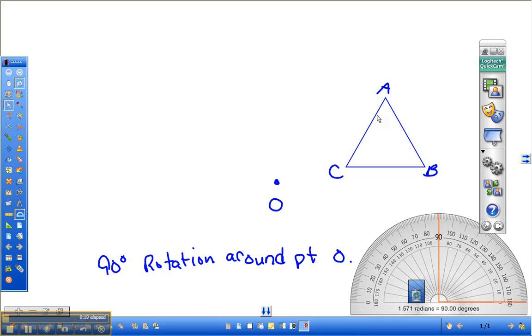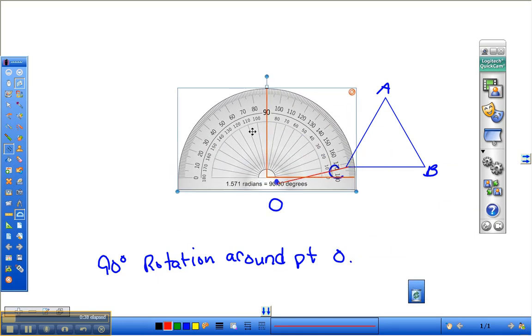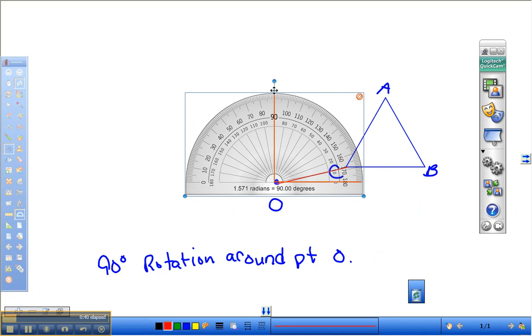Alright, I've got a triangle here, ABC, and we're going to rotate it 90 degrees around point O. And like we talked about, the first thing we need to do is to connect each vertex, and we'll start with C. We'll connect C to our rotation point, and we'll take our super cool protractor, and hopefully I'll be able to operate this okay.